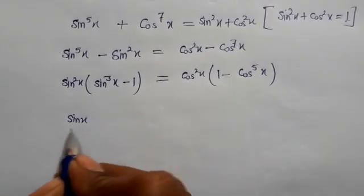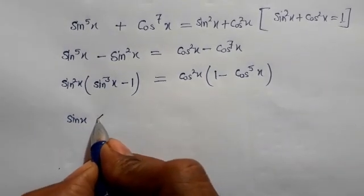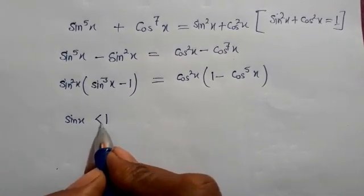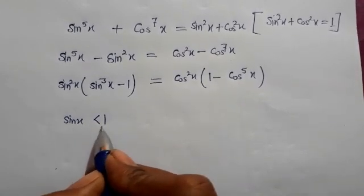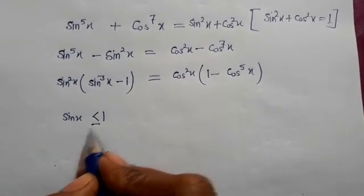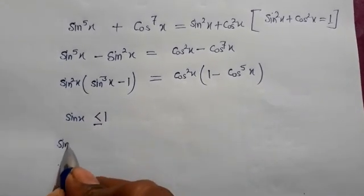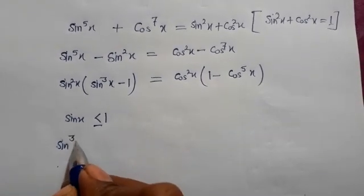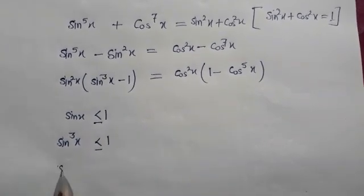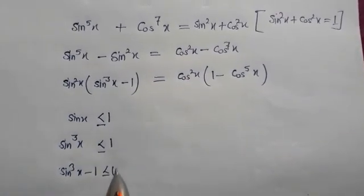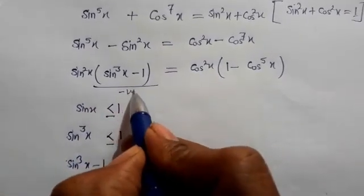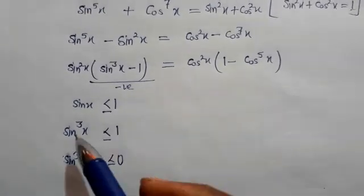The value of sin x is always less than or equal to 1. So putting a cube on both sides, sin³x is also less than or equal to 1, which means sin³x - 1 is less than or equal to 0. So this quantity sin³x - 1 is negative.